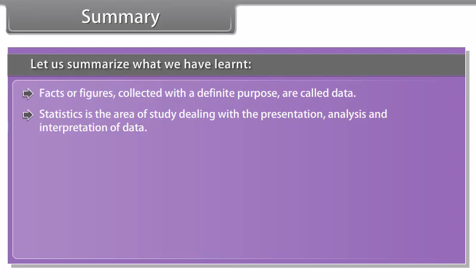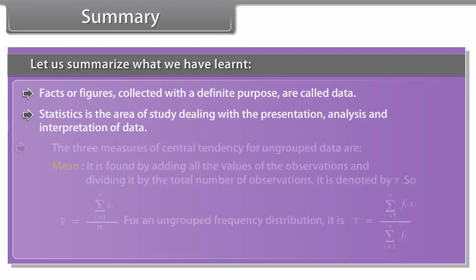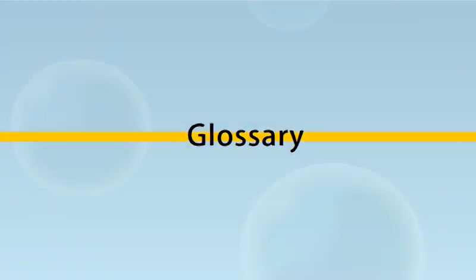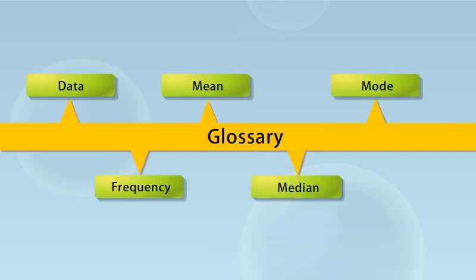Did you know: The word statistics has been derived from Latin word status or the Italian word statista meaning political state or a government. Shakespeare used the word status in his drama Hamlet in 1602. In the past, statistics was used by rulers. The application was very limited but rulers and kings needed information about lands, agriculture, commerce, population to assess their military potential, wealth, taxation and other aspects of government.